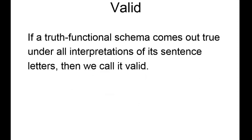For validity, if a truth functional schema comes out true under all interpretations of its sentence letters, we call it valid. An interpretation is an assignment of some value to a sentence. In truth tables we just have true and false, so if under all possible combinations of truth and falsity the entire statement comes out true, then we say it's valid.